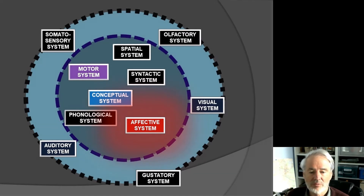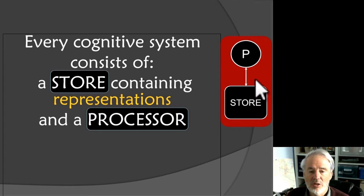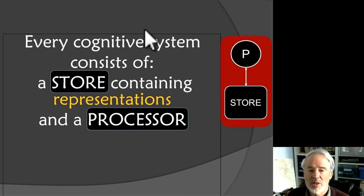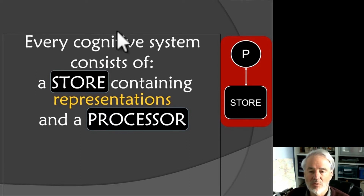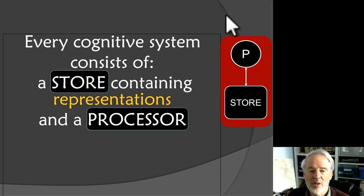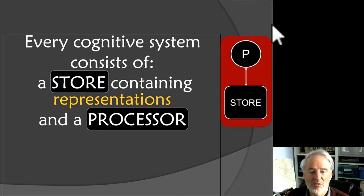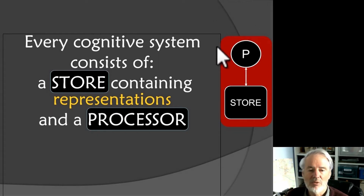Every one of these systems collaborates and interacts with each other but in a sense is unique. Each has a specific function, yet they all share the same basic architecture. Because we're talking about the abstract level of the mind, we can talk in terms of boxes and circles — of course, you don't have boxes and circles in your brain, but at this level we can talk about this.